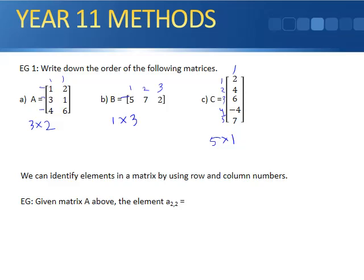And we can identify the elements, that means the numbers inside the matrix, by their row number and their column number. So in matrix A, we need to look at this first matrix right here, matrix A. The element two, two, that means the second row, which is right here, and the second column. It may intersect right over here at this number, which is number one.